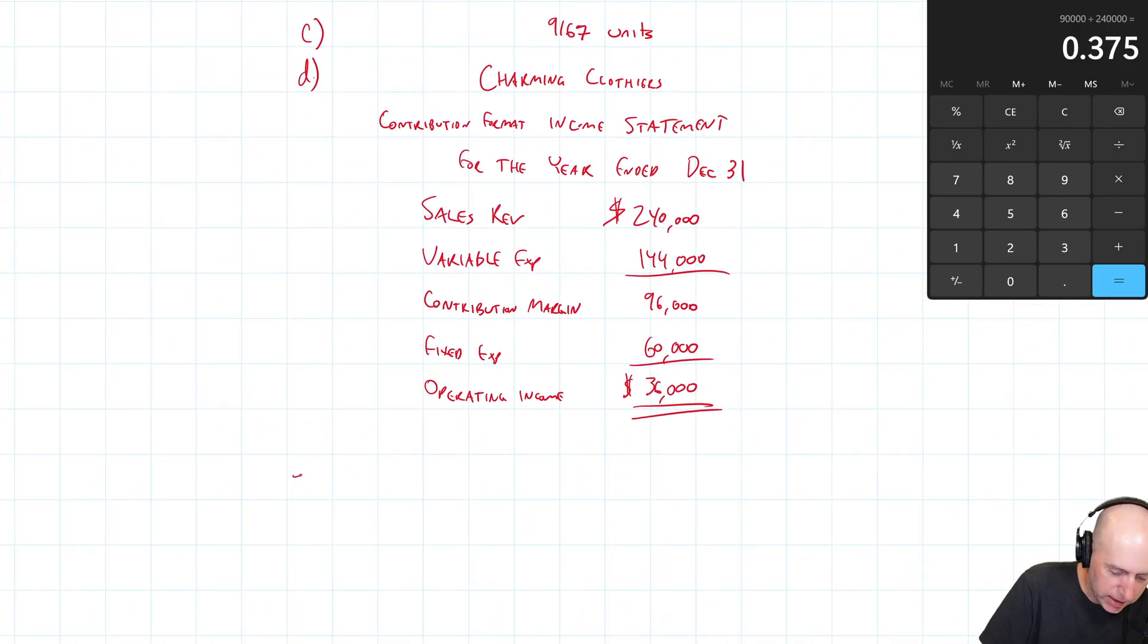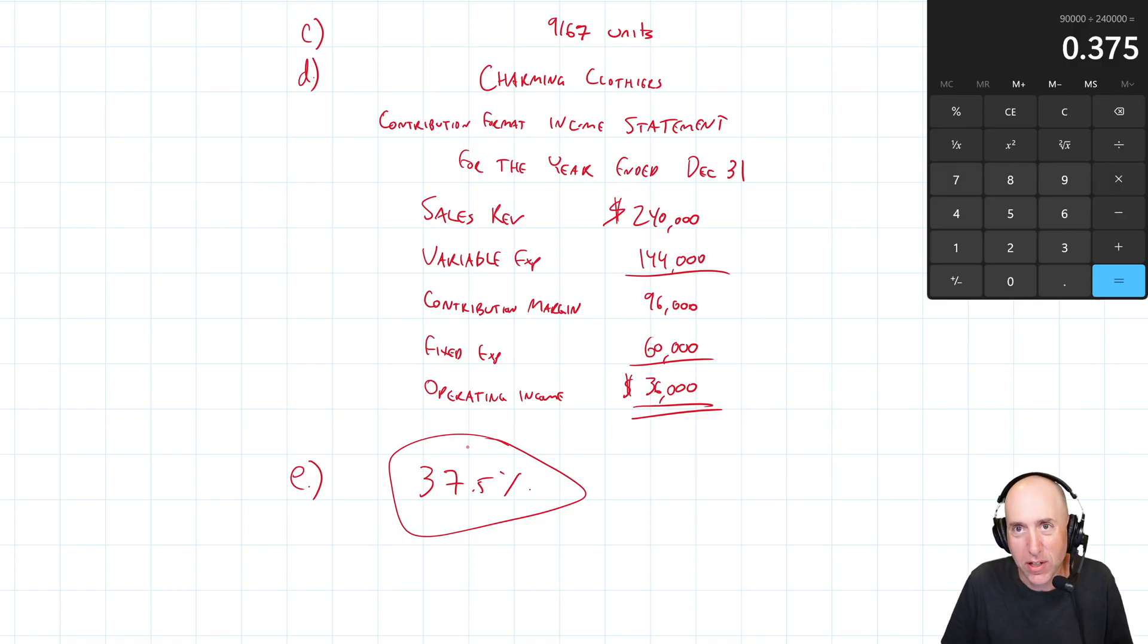But what the heck does it mean? 37.5% is the answer. That's our margin of safety. What does it mean? It means I can blow the budget. I can miss the budget by 37% and I'm still breaking even. So it means it's how much wiggle room you have, how much room for error. We're projecting the future. We can be about 37% off and we're still okay, we're still breaking even. That's what the margin of safety is. It's how much room do I have to be wrong about my sales estimates?